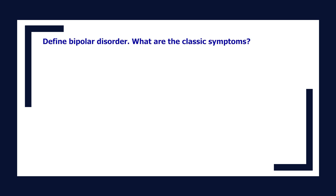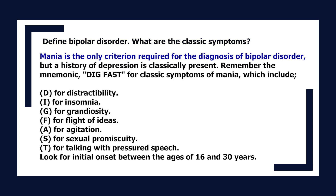Define bipolar disorder and its classic symptoms. Mania is the only criterion required for the diagnosis of bipolar disorder, but a history of depression is classically present. Remember the mnemonic DIG FAST for classic symptoms of mania: D for distractibility, I for insomnia, G for grandiosity, F for flight of ideas, A for agitation, S for sexual promiscuity, T for talking with pressured speech. Look for initial onset between the ages of 16 and 30 years.